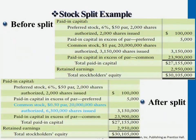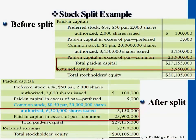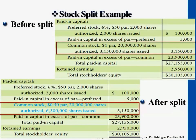Looking at the financial statements, all the dollar amounts are the same — the common stock balance and total stockholders' equity are exactly the same. The only difference, highlighted in blue, is that the number of shares doubled and each share's value is cut in half. That's all there is to stock splits.